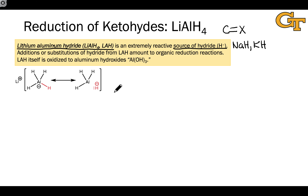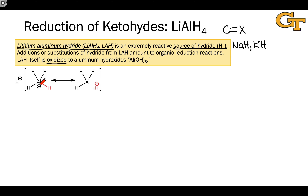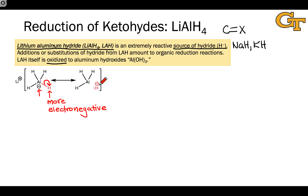Lithium aluminum hydride is an extremely reactive source of hydride, or H-, and additions or substitutions of the hydride anion from LAH amount to reductions. It's really a salt of the lithium cation and the aluminum hydride anion, AlH4-. To understand why this is a source of nucleophilic hydride, let's consider the relative electronegativities of aluminum and hydrogen. Hydrogen is more electronegative than aluminum, meaning the aluminum-hydrogen bond is polarized very strongly toward hydrogen.